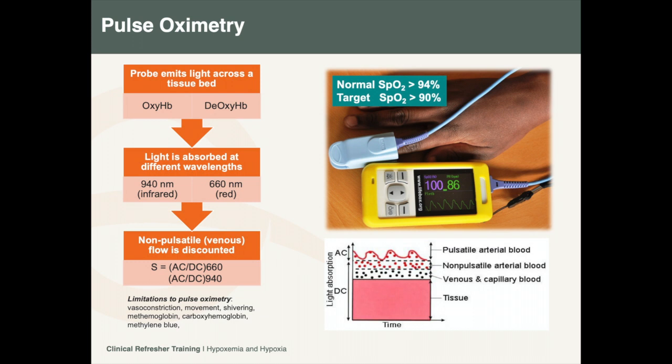When a pulse oximeter shines through a tissue bed, that light is absorbed by the tissues. Hemoglobin that is bound to oxygen, termed oxyhemoglobin, absorbs light at a different wavelength than hemoglobin not bound to oxygen, or deoxyhemoglobin.